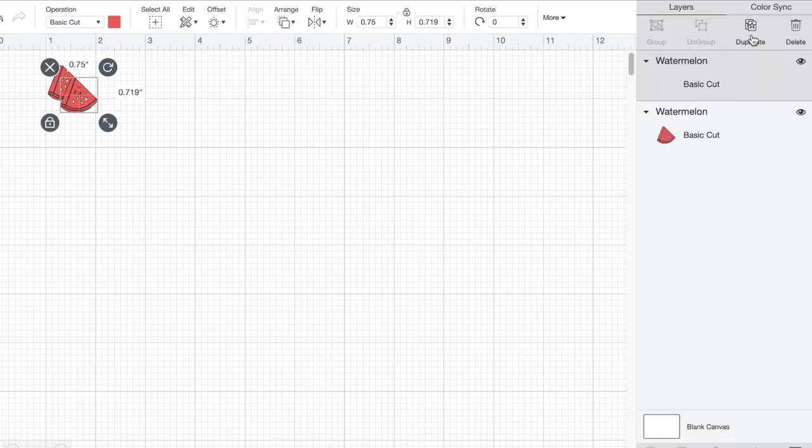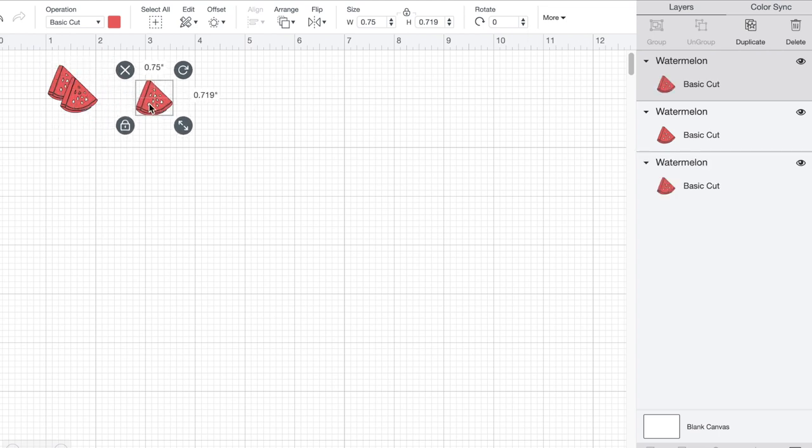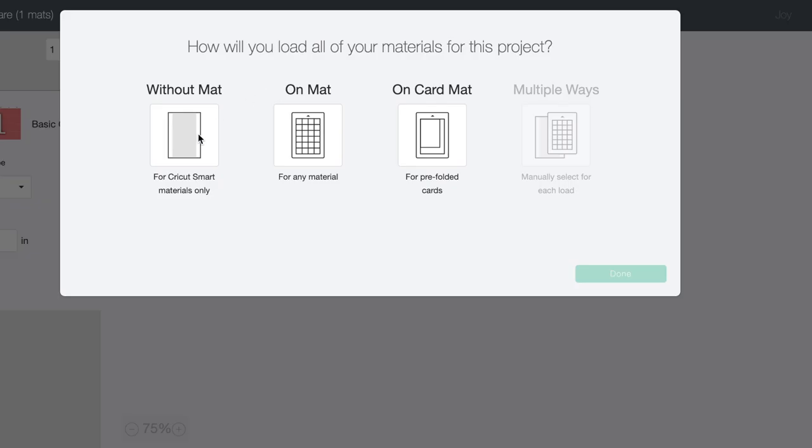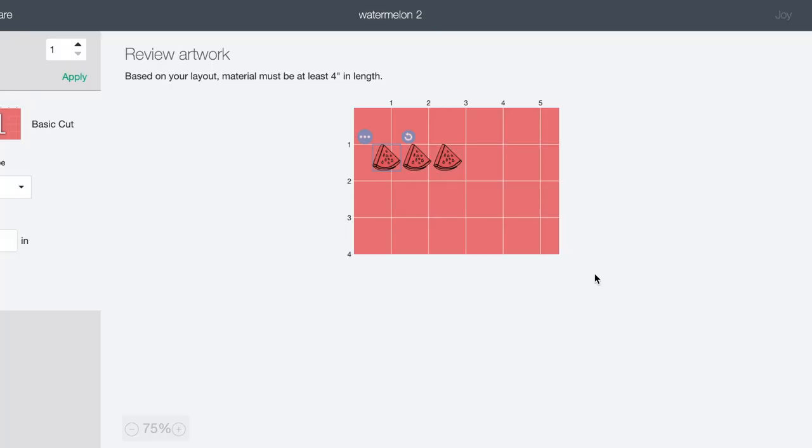So I actually knew that I kind of wanted it to be three quarters of an inch, so I just went up to Size and put 0.75. And then I duplicated this a bunch of times so that I have enough to fit on my little candle holder. Now it is time to make it.